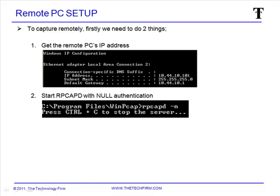We're going to go to the remote computer that we want to capture from and get the IP of the computer, which in this case is 10.44.10.101, and we're going to start RPCAPD from that same computer. We'll go to the Program Files WinPCAP folder, which means you need WinPCAP installed on that machine — not necessarily Wireshark, just the WinPCAP driver. From the command prompt, we're going to type rpcapd space minus N, which basically means run the driver with null authentication.